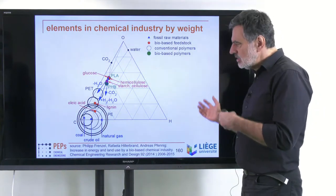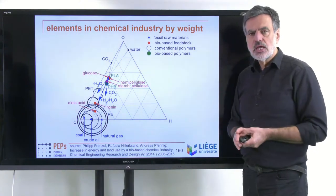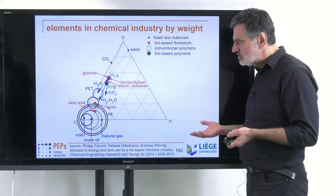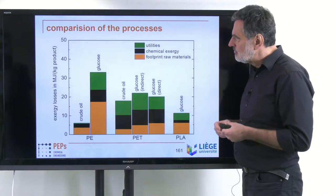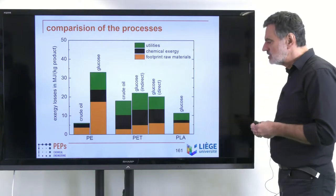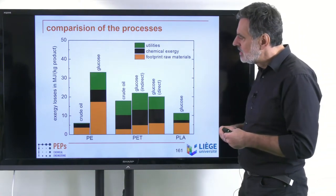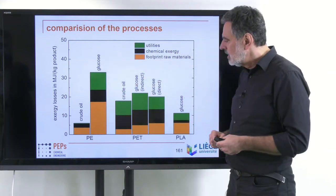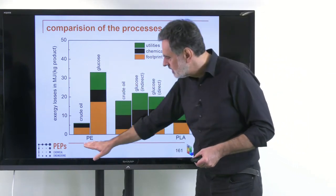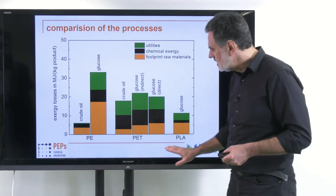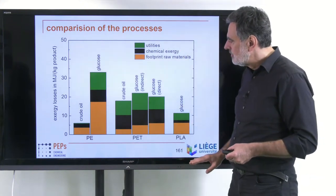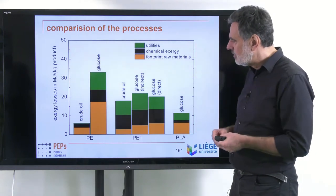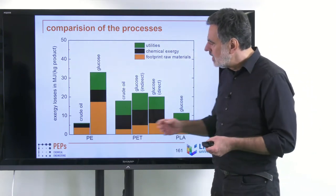Now, based on this exergy framework, keeping these reactions in mind, we can also come up with certain process descriptions. Philipp Frenzel did that in his studies: he evaluated what happens if we start out with different feedstocks and produce different polymers — polyethylene, PET, and polylactic acid — and how well the different routes perform.